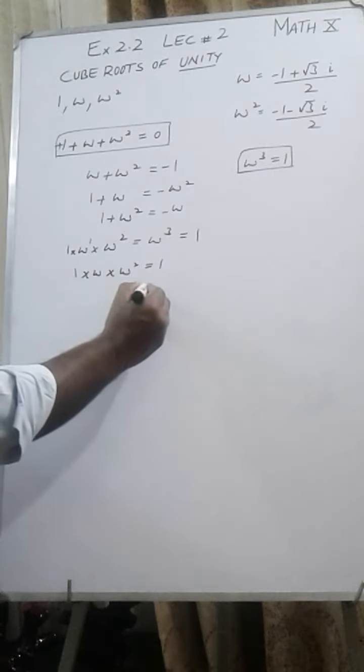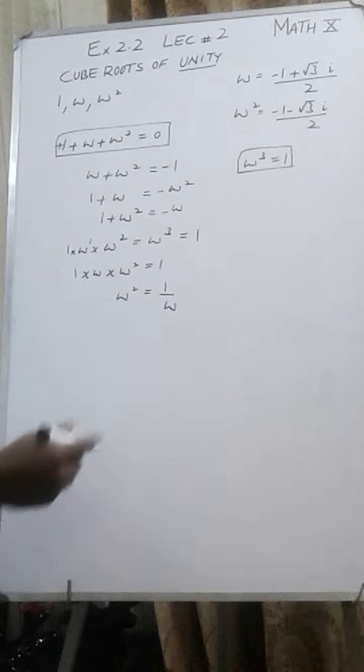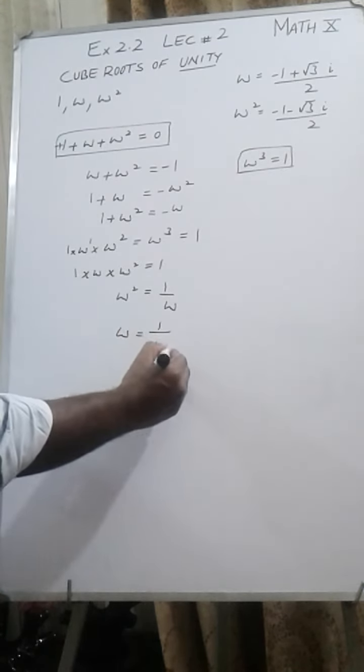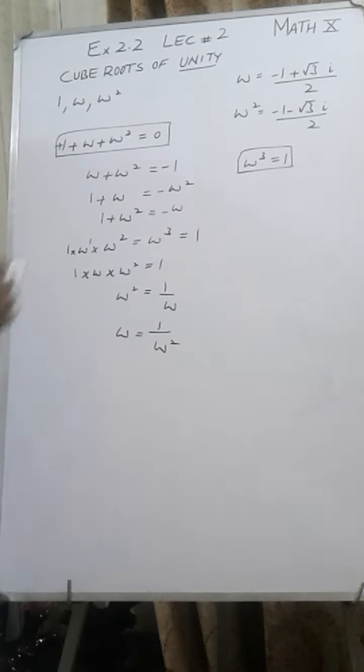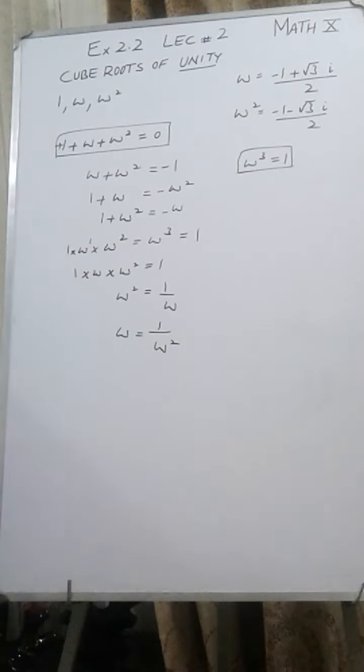From here, ω² = 1/ω or ω = 1/ω². Omega and omega square are imaginary roots of unity, and we may say they are reciprocal of each other. Their product is 1 and their sum is 0. Do the practice of these things before starting the exercise. Then, after this practice, in the next section we are going to start Exercise 2.2. Thank you very much.